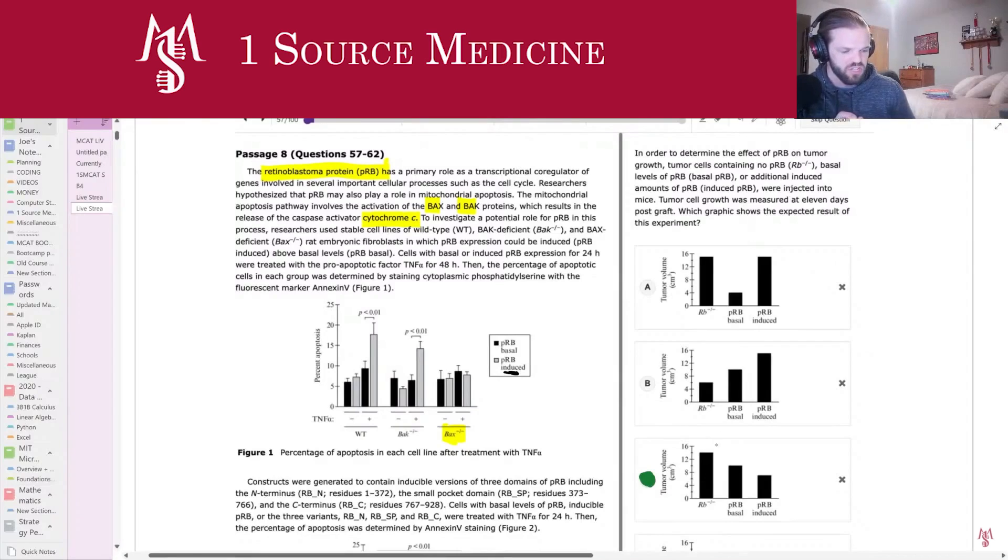So then I looked at these three cell lineages. The RB negative, negative has no capacity to produce PRB, right? And that's how they define these up here in the questions. They said tumor cells containing no PRB, RB negative, negative, and then gave me basal PRB. They define basal PRB over here in the passage. Basal PRB is defined as just like baseline levels of PRB, normal PRB, versus induced PRB, which they define in the passage as greater than basal levels of PRB.